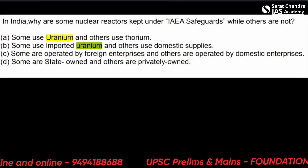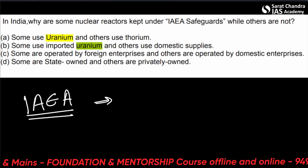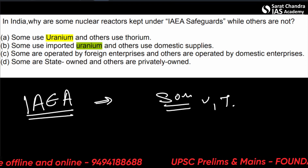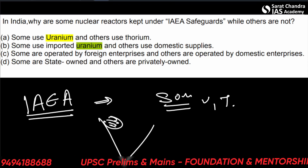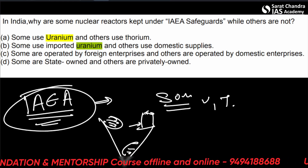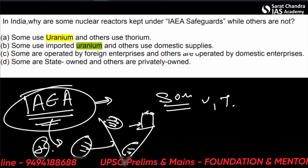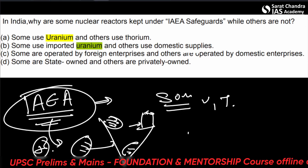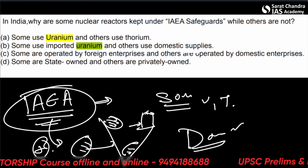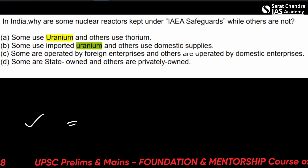Why are some nuclear reactors in India kept under IAEA (International Atomic Energy Agency) safeguards? The key distinction is that some reactors use imported uranium while others use domestic supplies. When India uses imported uranium, the IAEA has oversight. Privately owned reactors do not currently exist in India, though proposals have been made. Therefore, the correct answer is B — some use imported uranium and others use domestic supplies.